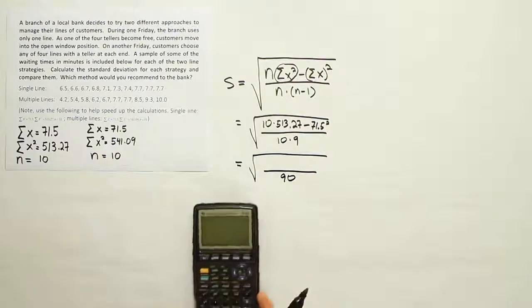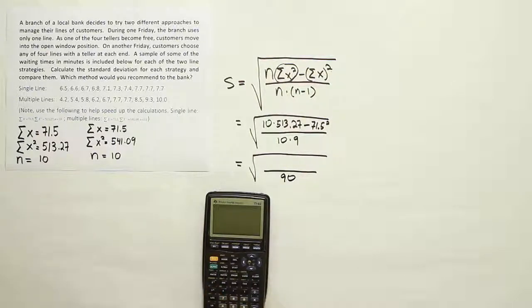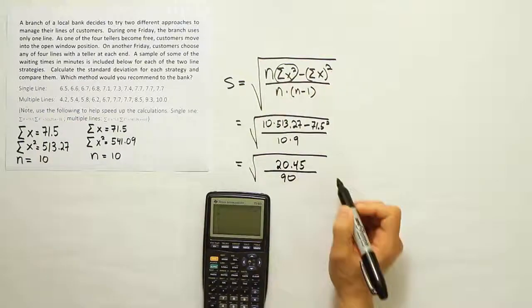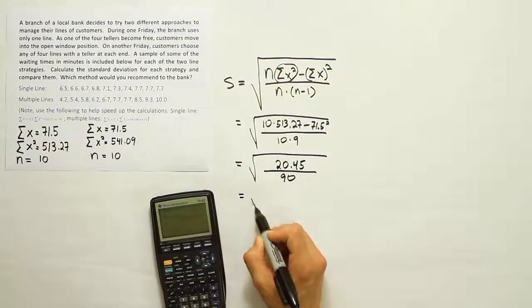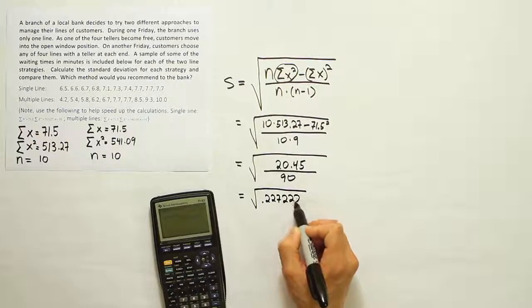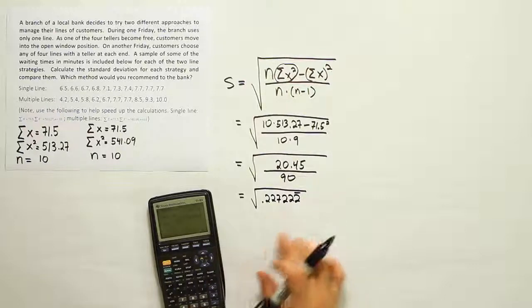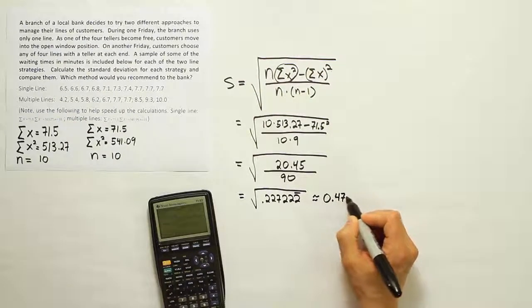Okay, so on the bottom, we have 90. And on the top, we'll end up with 10 times 513.27. Of course, you just have to move the decimal place over for that. 71.5 squared. When we subtract those two numbers, we end up with 20.45. All right, now divide by 90. And under the square root, under the radical, we end up with 227.222 repeating. I'm going to take the square root there, without rounding anything, I'm just going to take the square root of the number that's in my calculator,